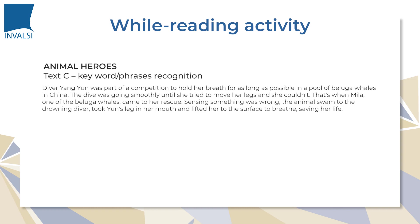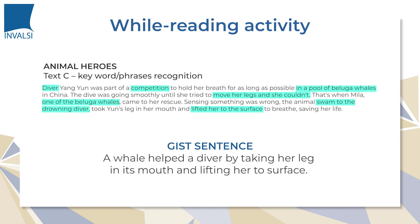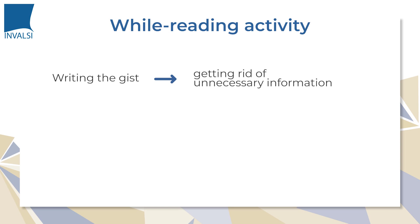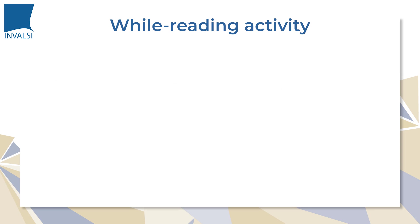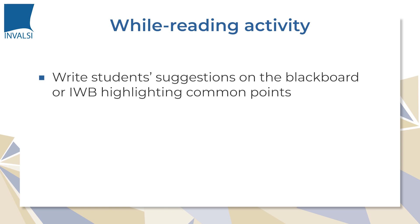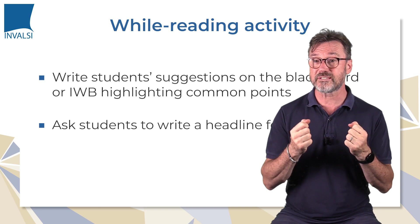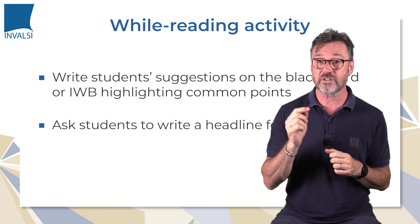They're going to work in pairs or small groups. We underline that writing the gist of a text implies getting rid of unnecessary information. We then write the students' different suggestions on the blackboard or interactive whiteboard, highlighting common points. Lastly, we ask students in pairs or small groups to write a headline for each text. Pause the video and download the text and the activity using the links.